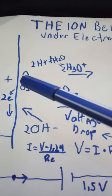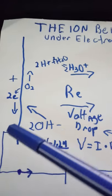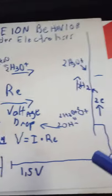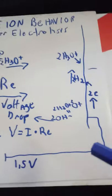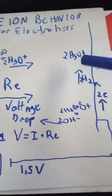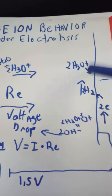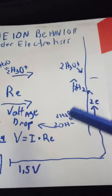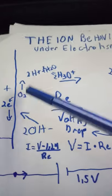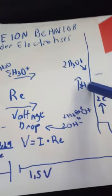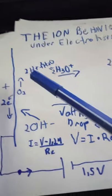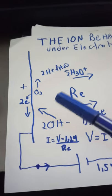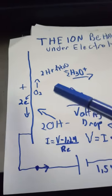When you take these electrons out and consume them by giving them to the hydronium ions, you generate oxygen here and hydrogen here.